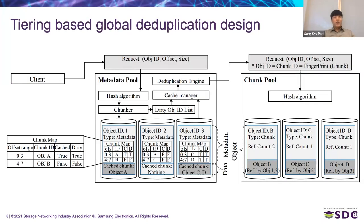The figure shows a tiering-based global deduplication design. The proposed method consists of a metadata pool and a chunk pool. The metadata pool contains metadata objects that include deduplication metadata and cached chunks. The chunk pool contains deduplicated chunks. All objects' locations are determined by their own object ID. In the case of a chunk object, each object ID is generated by its contents using a fingerprint hash.